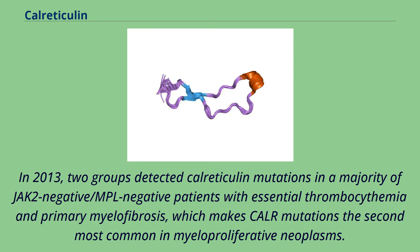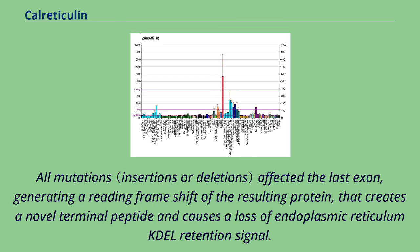In 2013, two groups detected calreticulin mutations in a majority of JAK2/MPL-negative patients with essential thrombocythemia and primary myelofibrosis, which makes calreticulin mutations the second most common in myeloproliferative neoplasms. All mutations affected the last exon, generating a reading frame shift of the resulting protein that creates a novel terminal peptide and causes a loss of endoplasmic reticulum retention signal.